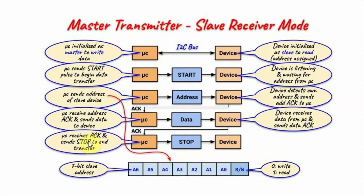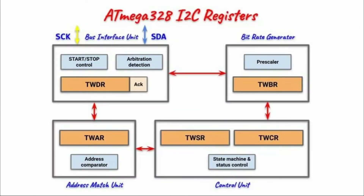Once the microcontroller receives the acknowledgement signal, it will send the stop pulse to end the data transfer. The ATmega328 I2C registers, also called TWI registers based on the datasheet, consist of the data register, the address register, the status register, the control register, and the bit rate register.